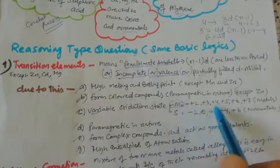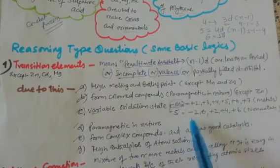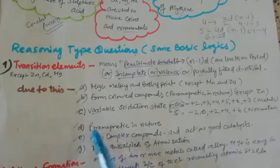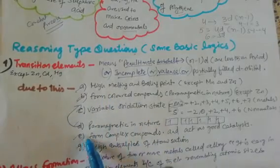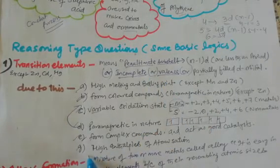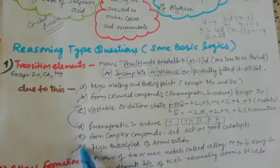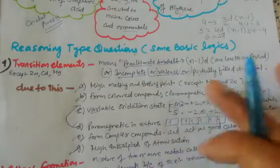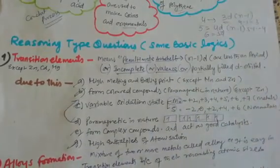Among metals, manganese shows the maximum variable oxidation states from +2 to +7. Sulfur, as a non-metal, shows maximum variability from -2 to +6. Transition elements are paramagnetic due to half-filled orbitals, and most paramagnetic metals show color. They also form complex compounds, act as good catalysts, show interstitial behavior, and have high enthalpy of atomization — all because of their incomplete or partially filled d orbitals.